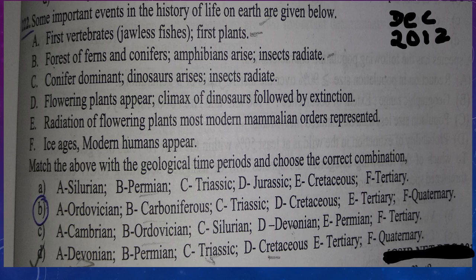This is a combination type question. In combination type questions, there is no need to know everything — you can answer if you know some statements. Let's see how to answer. The first statement is: first vertebrates, jawless fishes, first plants. First plants appear in Ordovician — that is also the age of invertebrates — and at that period first vertebrates appear. So we can say this is Ordovician.